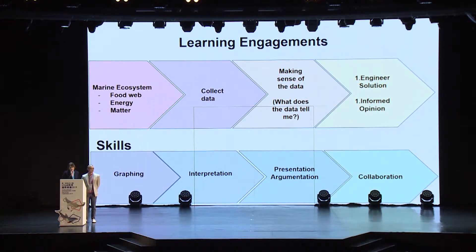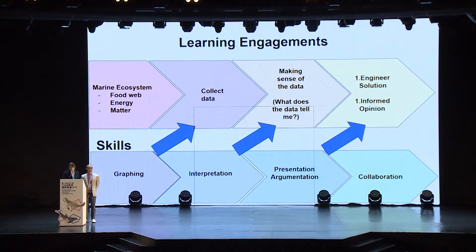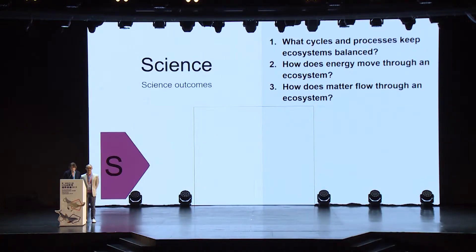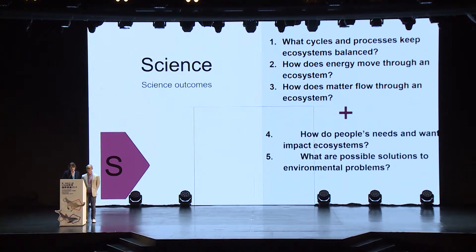To support these end goals, an inquiry learning experience was strategically designed. For example, the pre-teaching of graphing and data interpretation skills allowed students to accurately analyze and interpret collected data. Students also required knowledge of ecosystems and knowledge of the local issue before they could decide to take action. Since social issues drove the inquiry, we added two more questions to link the human impact: how do people's needs and wants impact ecosystems, and what are possible solutions to the environmental problem?